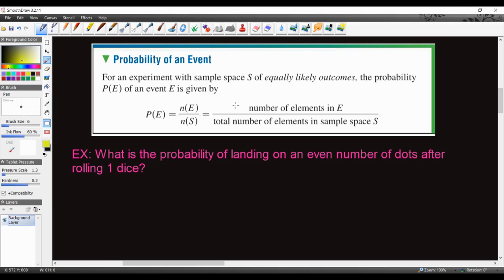So let's go ahead and look at some more examples. We have the probability of an event. For an experiment with sample space S of equally likely outcomes, the probability P(E) of an event is given by the following: P(E) is equal to n(E) over n(S). Where n(E) is the number of elements in E, so the number of times that that event could happen, over the total number of elements in the sample space, over the total elements that we have available.